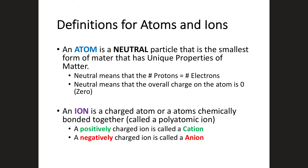An ion, on the other hand, is a charged atom or atoms chemically bonded together — those are called polyatomic ions. A positively charged ion is called a cation, and a negatively charged ion is called an anion. You can remember: think of a cat with paws — cation is positive. An anion is a negative ion. Atoms are always neutral, so protons equal electrons. An ion is a charged atom, either positively or negatively, meaning electrons differ from the number of protons.